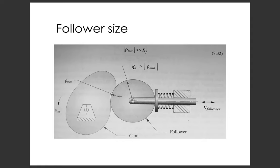There are two major follower size issues to worry about: multiple contact and undercutting. Multiple contact occurs when the follower radius is larger than the minimum concave radius. If the minimum concave radius is smaller than the follower radius, the follower cannot interpolate through there — it will make contact in two places, hence 'multiple contact,' and you won't get the SVAJ diagram you designed. You'll almost certainly get discontinuities, and the cam will tear itself to pieces.